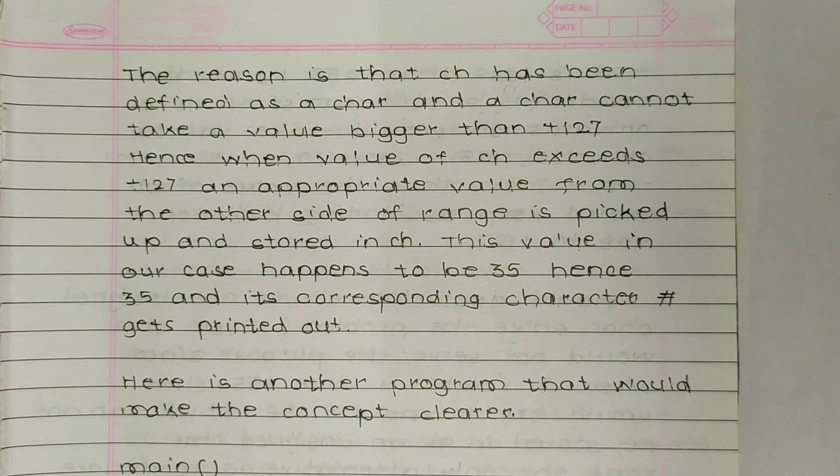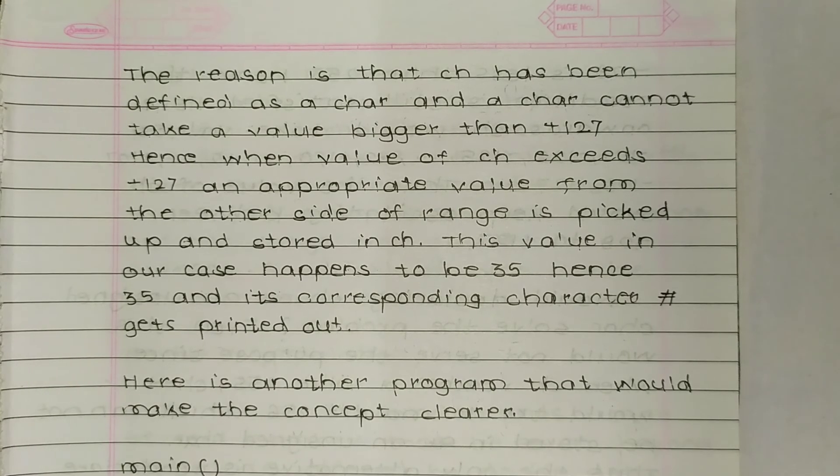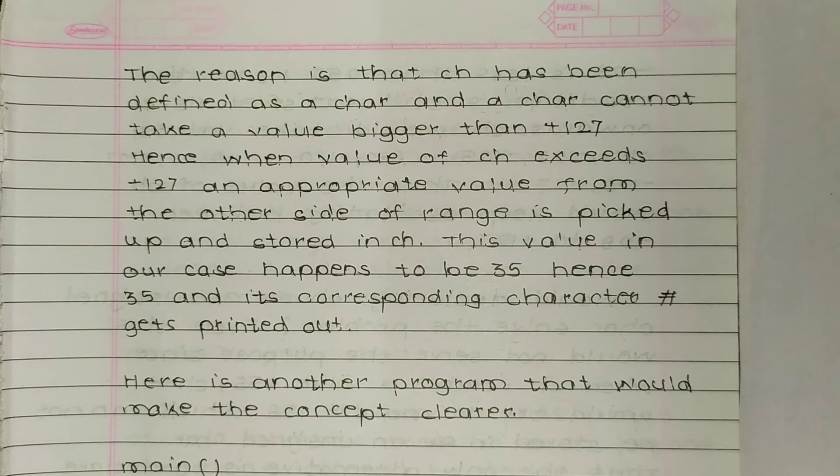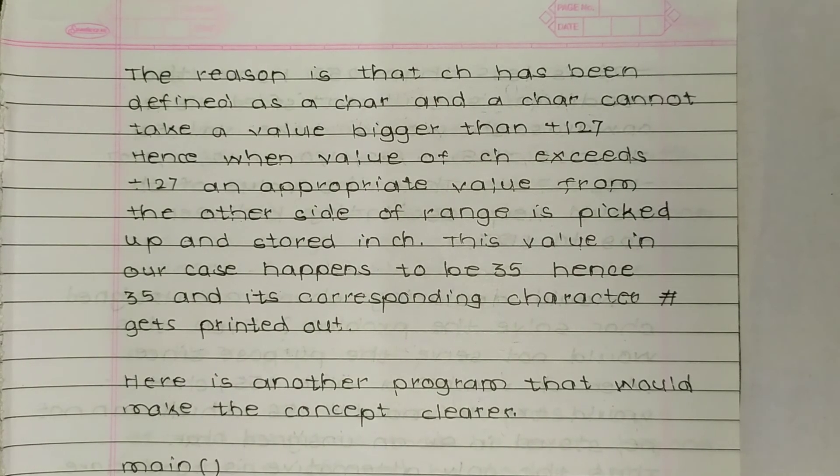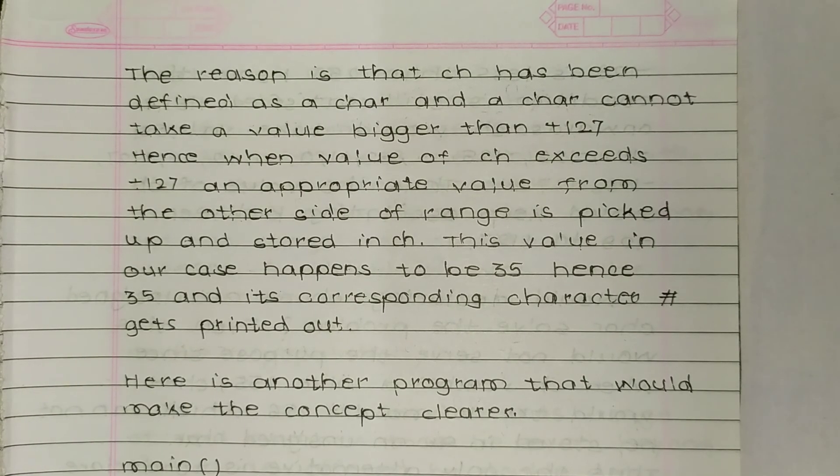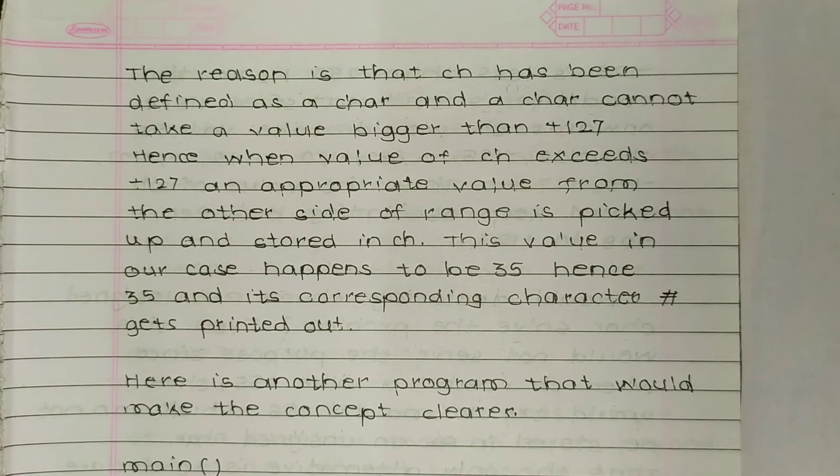This value in our case happens to be 35. Hence 35 and its corresponding character hash gets printed out. Here is another program that would make the concept clearer.